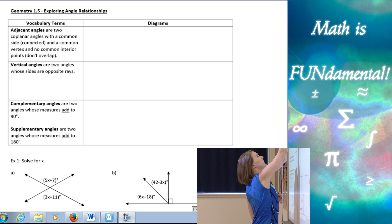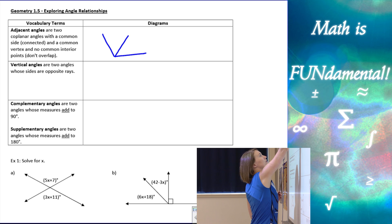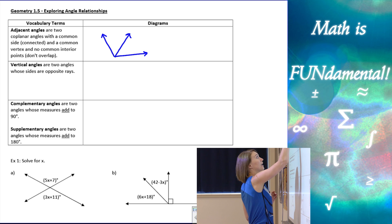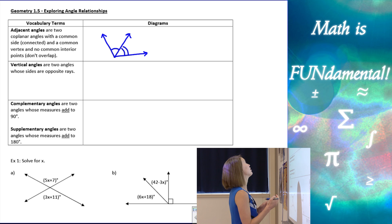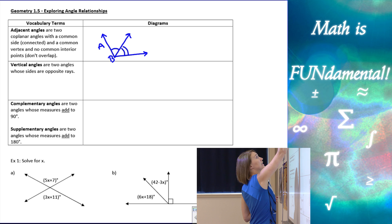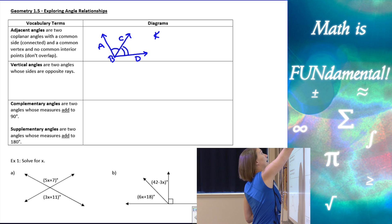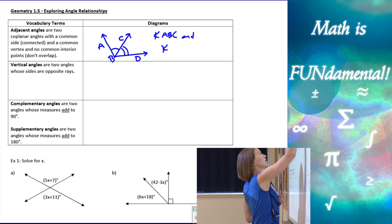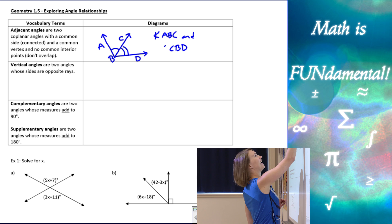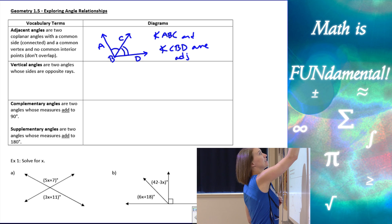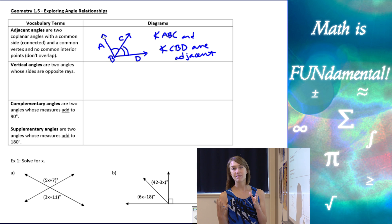In a diagram, adjacent angles are two angles that are connected. They're connected with a common side — if I have this angle here and this angle here, they share that common side, they share a common vertex, and they don't overlap. So if I label points A, B, C, D, then angle ABC and angle CBD are adjacent. It just means they're connected with a side, they don't overlap, they share that vertex point.